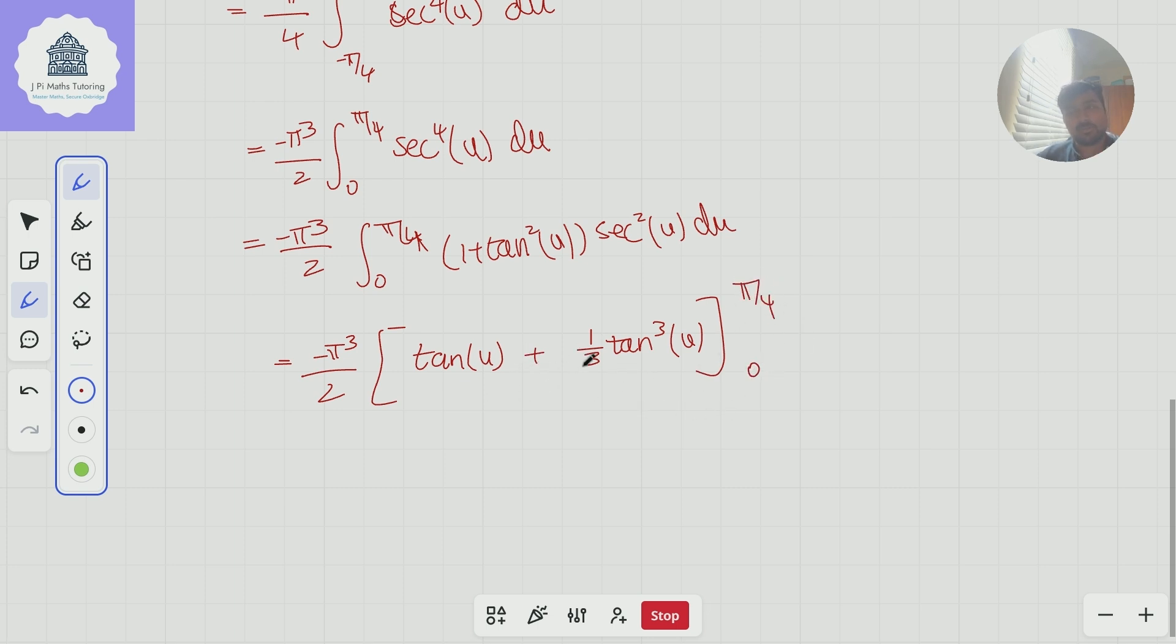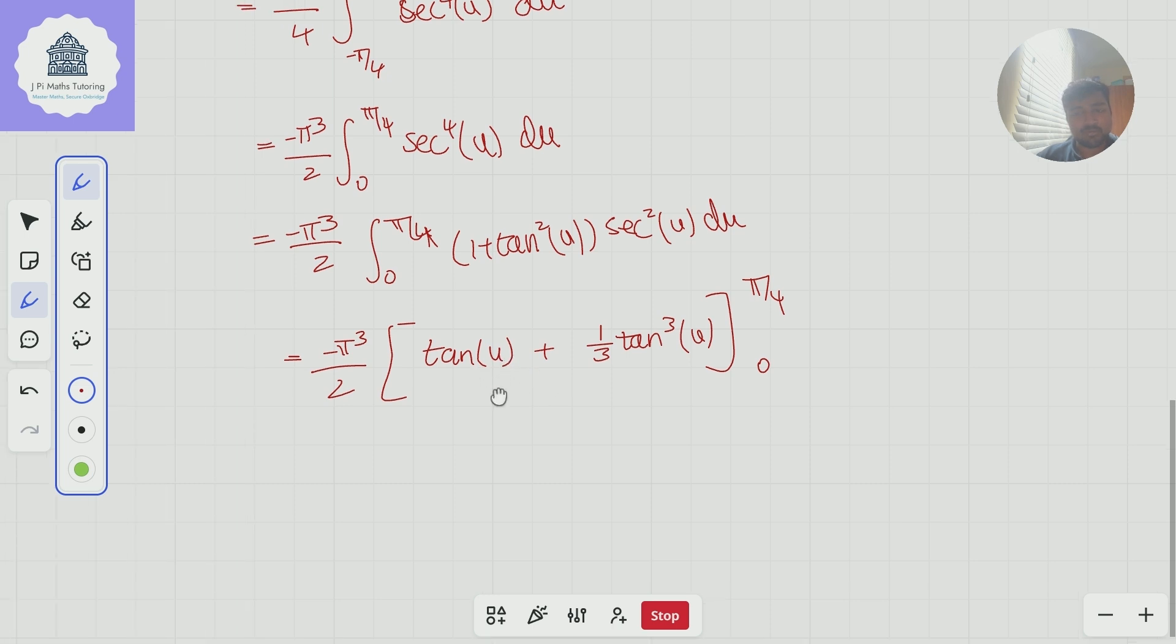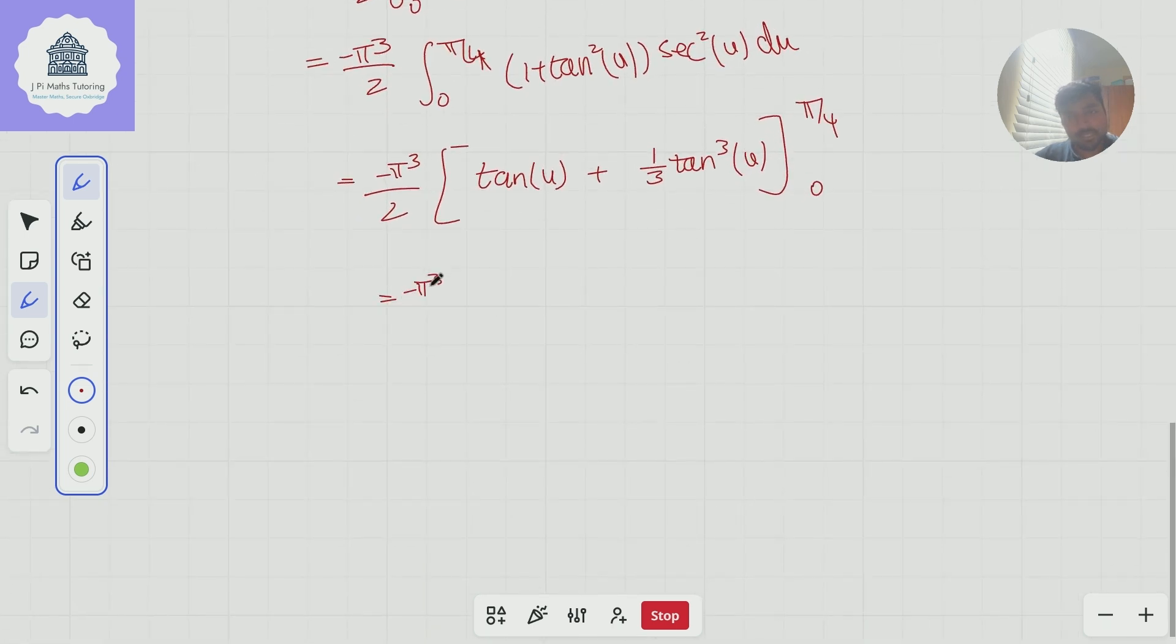Thankfully, when you plug in 0, you get 0. When you plug in π over 4, tan of π over 4 is 1. So we're just going to get minus π cubed over 2 times 4 thirds, which is minus 2π cubed over 3. And that there is the value of our integral.